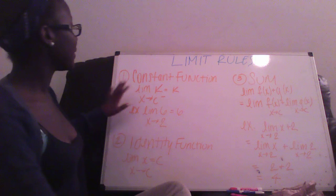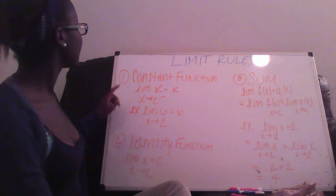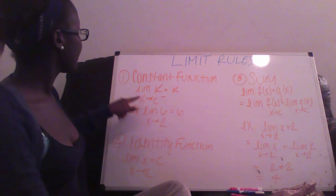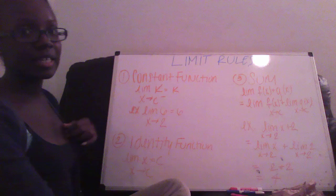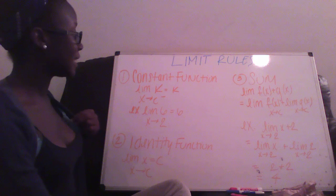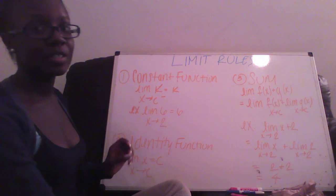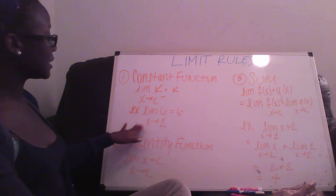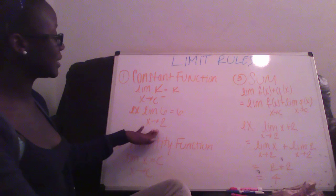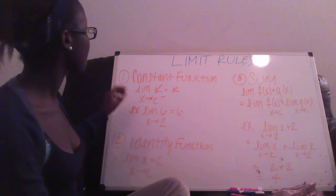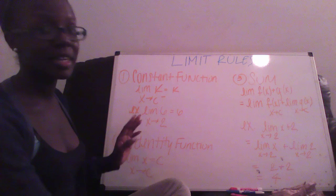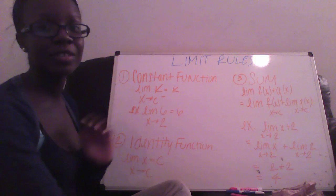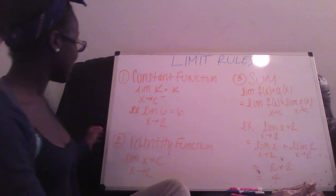The first one we're going to talk about is the constant function. When there's a limit of k with x going towards c, the answer is still going to be k. For example, the limit of 6 is still going to equal 6 even though x is going towards 2. It's going to be constant — 6 equals 6, 7 equals 7, everything like that.